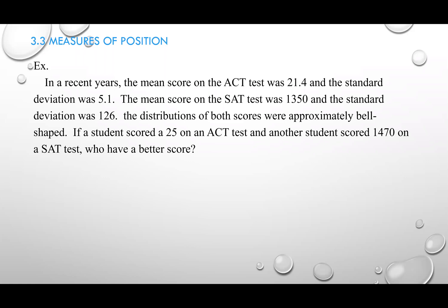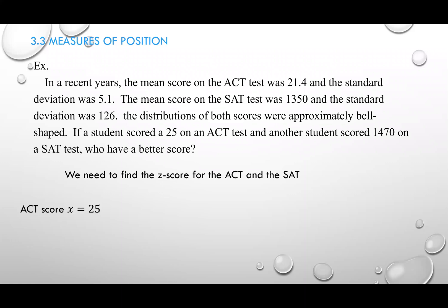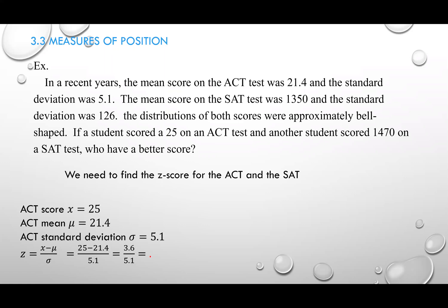If you work in university admissions and two students send in one ACT and one SAT score, how do you know which is better? They have different grading systems — the maximum ACT score is 36, and the maximum SAT score is around 1600 or 1800. That's where the z-score comes in. To find the ACT z-score: the student scored 25, the mean is 21.4, and the standard deviation is 5.1. Plugging in: 25 minus 21.4 divided by 5.1 gives us 0.71. The student is above the mean by 0.71 standard deviations.